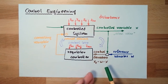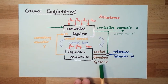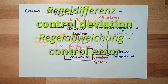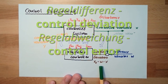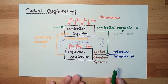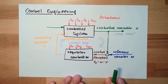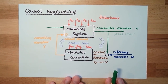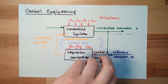There's the control deviation and the control error — there are two terms. One is w minus x, and one is x minus w. This distinction is not really that important. Whether you say control error or control deviation, it's okay as long as you understand what is behind it.